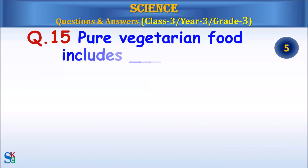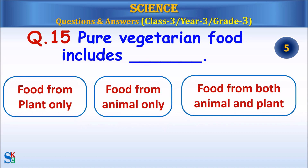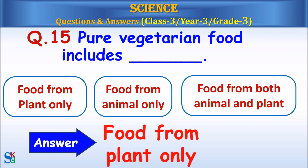Question 15: Pure vegetarian food includes — food from plant only, food from animal only, or food from both animal and plant? Answer: Food from plant only.